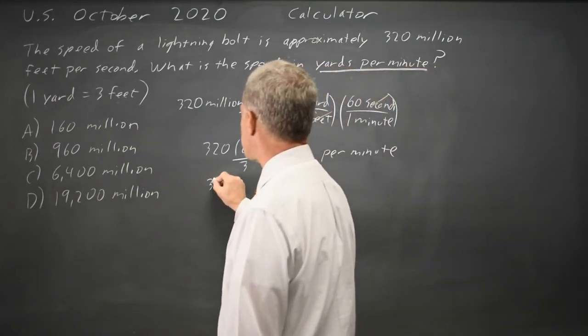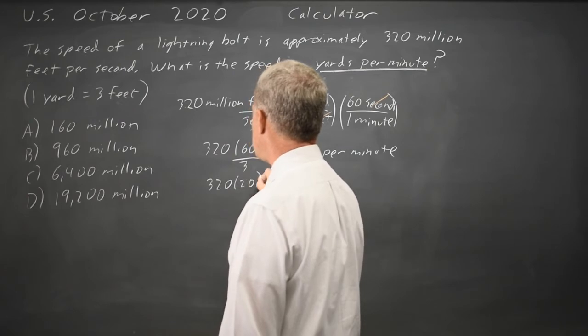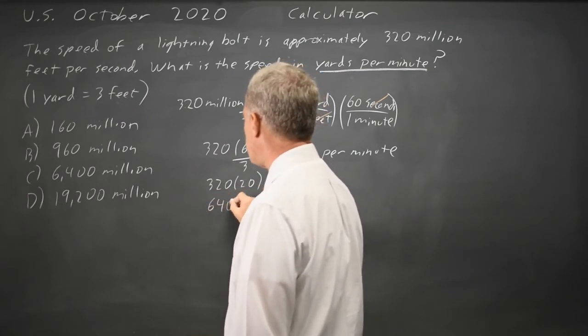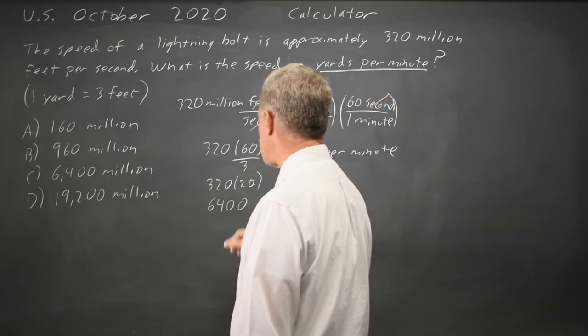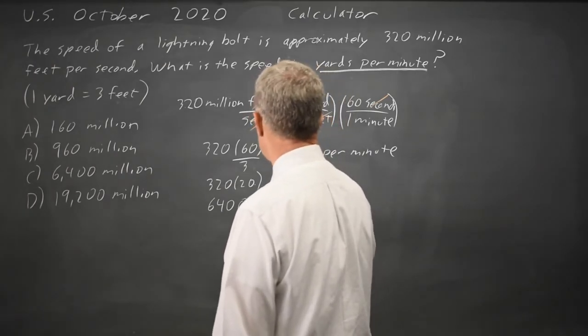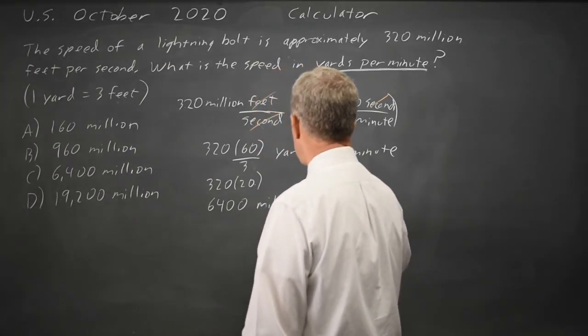60 over 3 is 20 so that's 320 times 20. 32 times 2 is 64 and you get an extra 0 because it's times 20. And that is in million yards per minute.